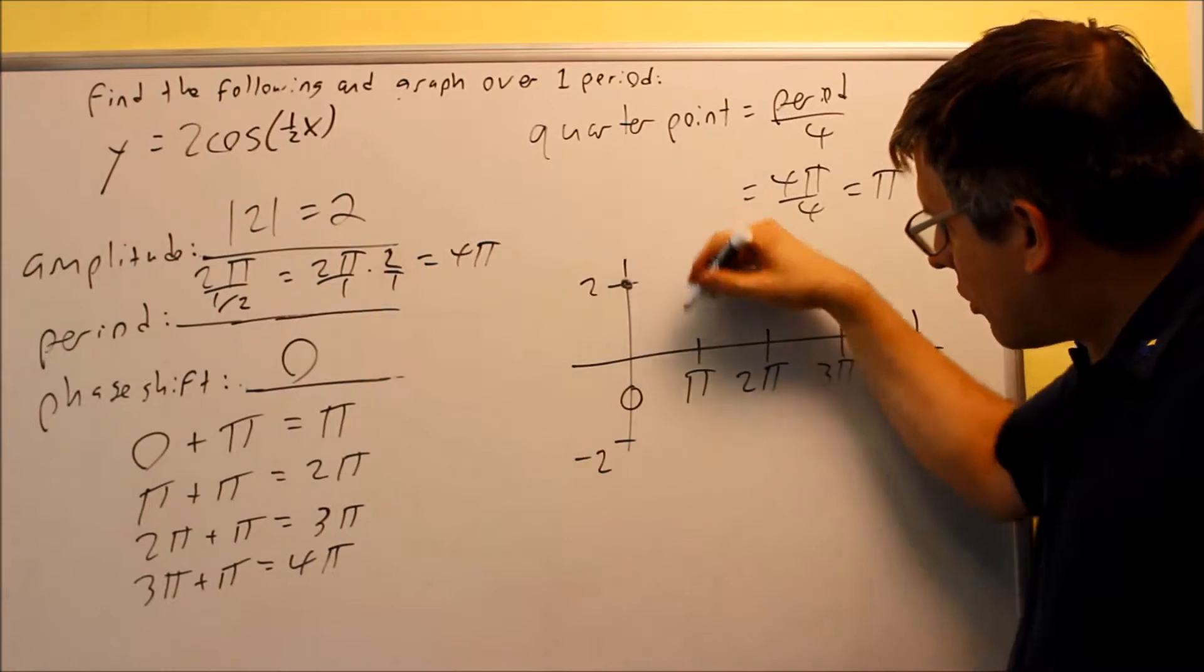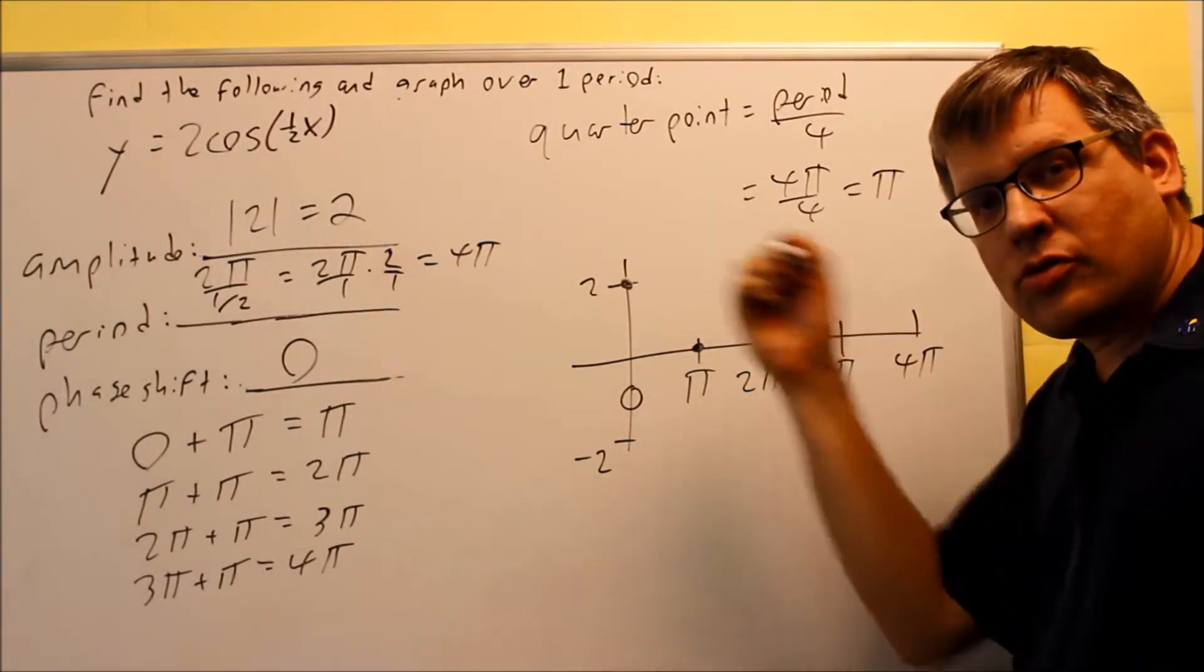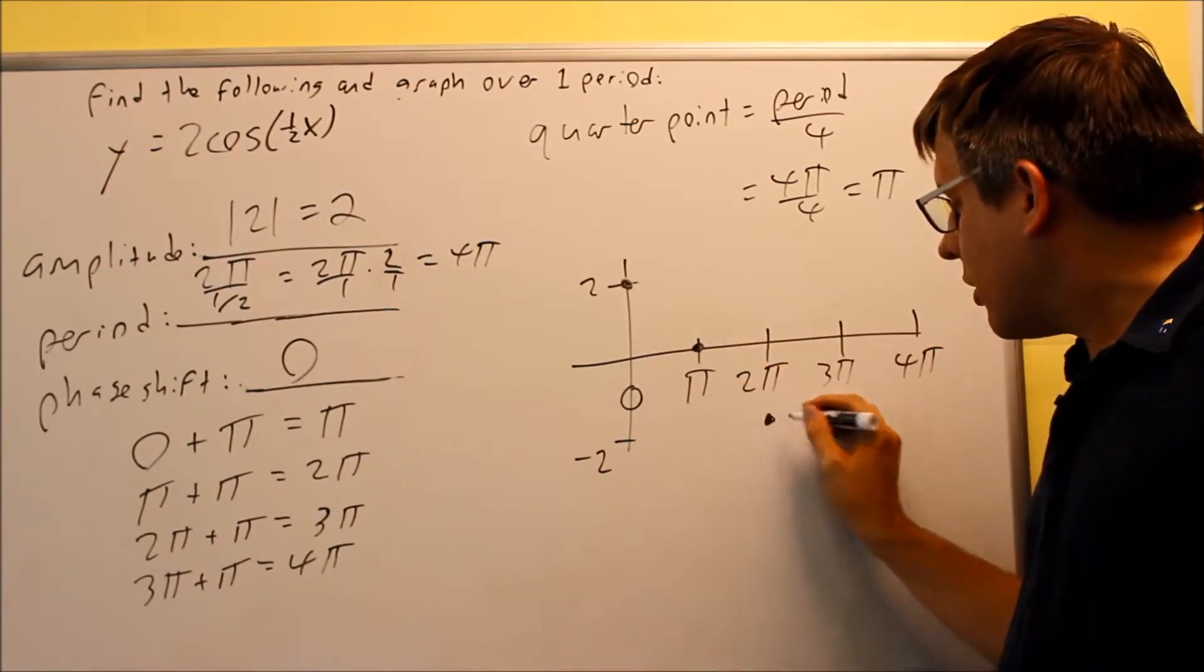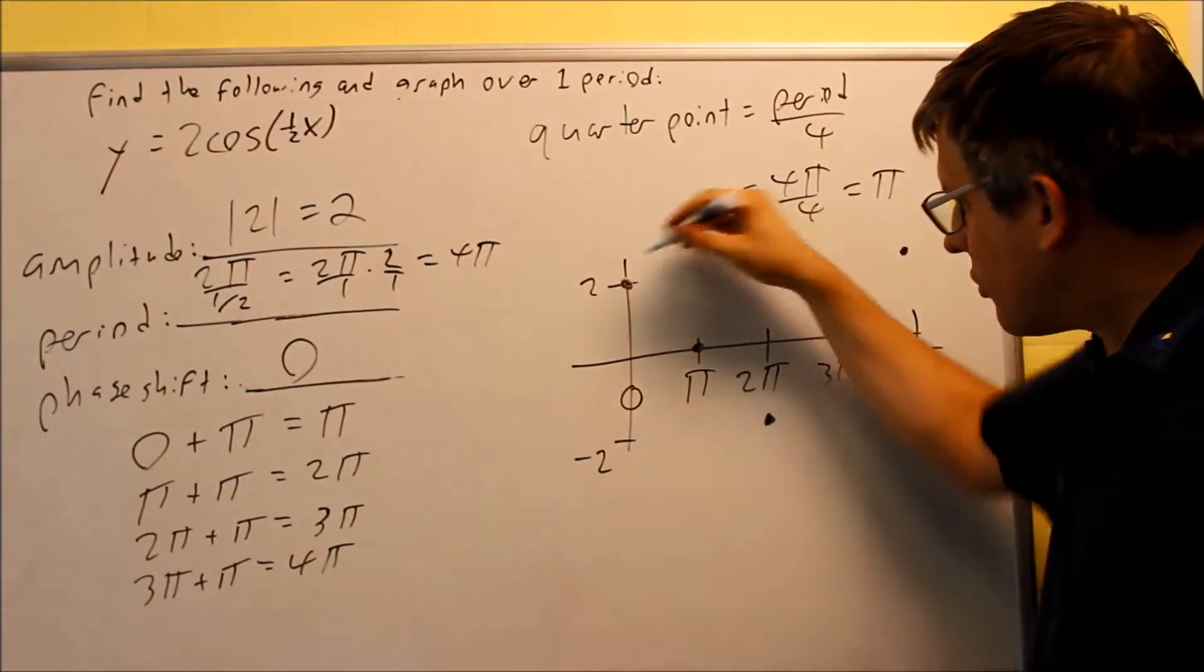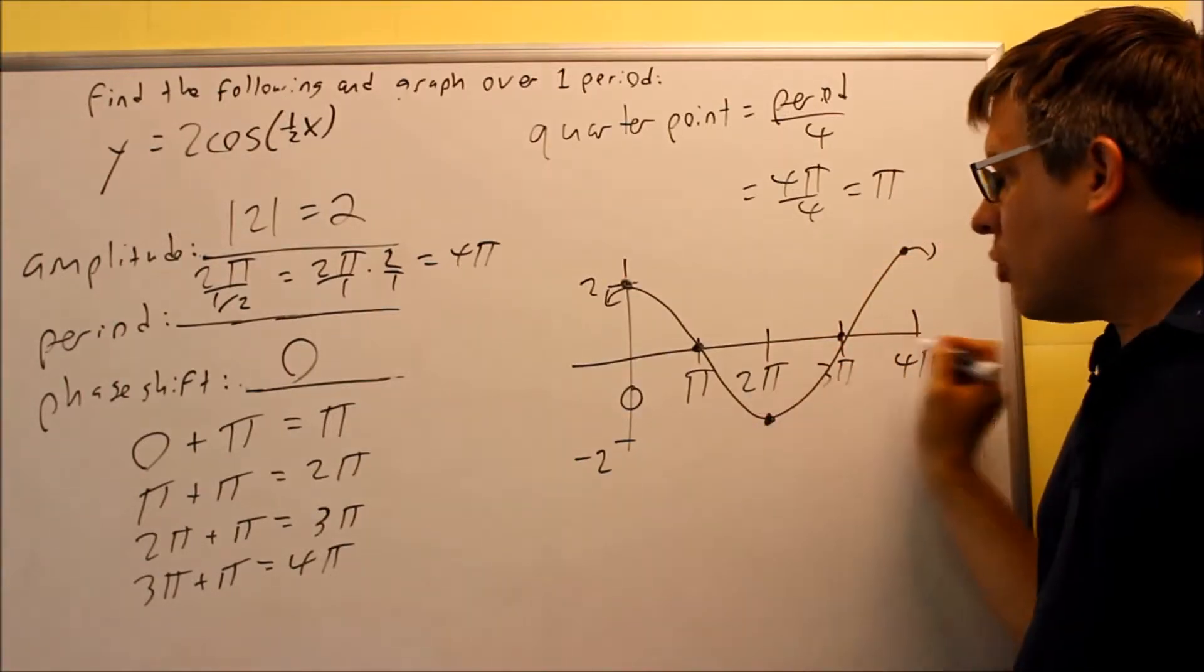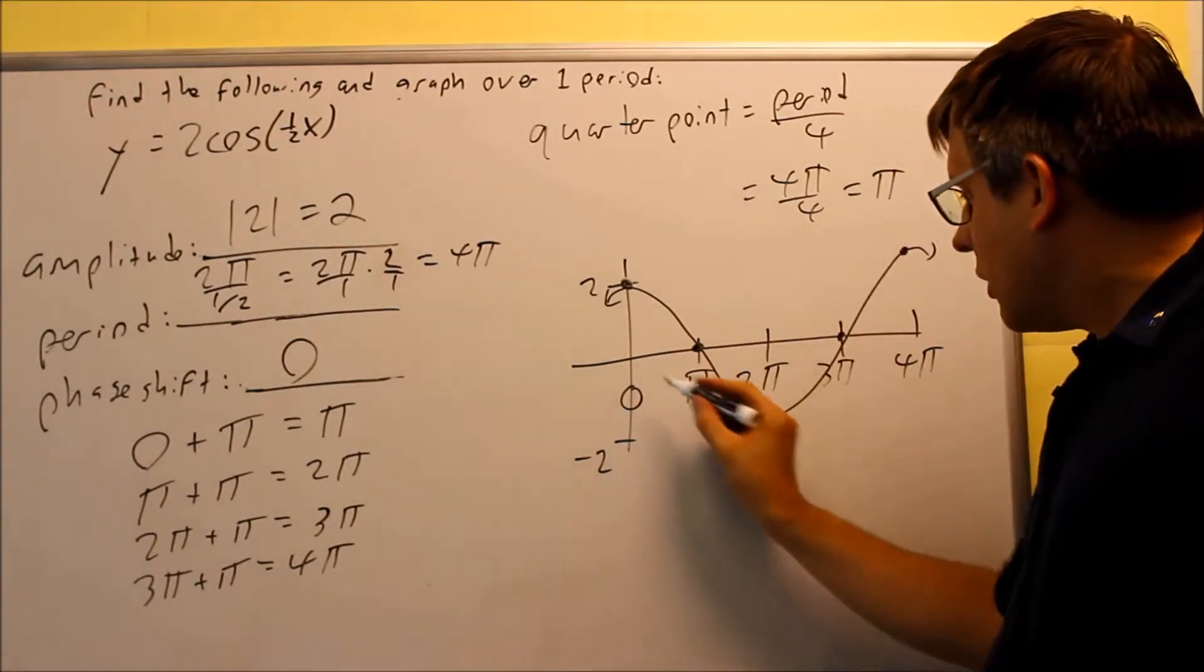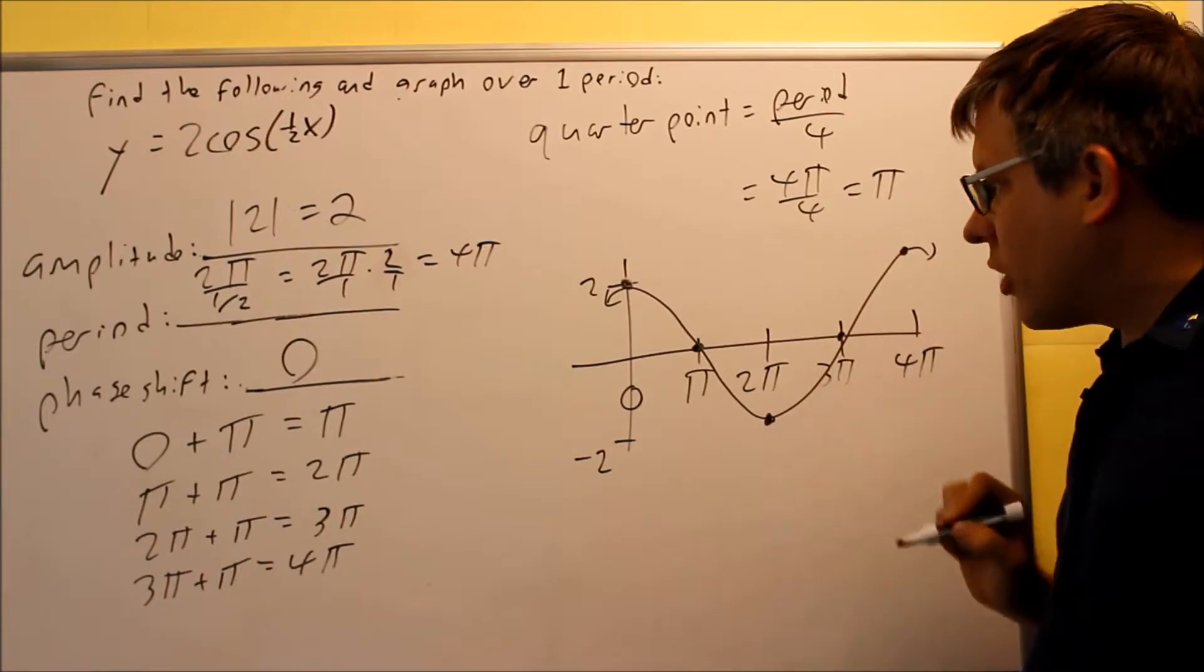Then the next one, it's going to go down to x-axis. It always alternates between your amplitude and your x-axis, so amplitude, x-axis, amplitude down here, x-axis, back up again to the amplitude, so the graph itself is going to look something like this. That would be one cycle. It's asking you to do one period, so one period is the amount of time it takes to cycle to repeat itself. That would be one complete cycle.